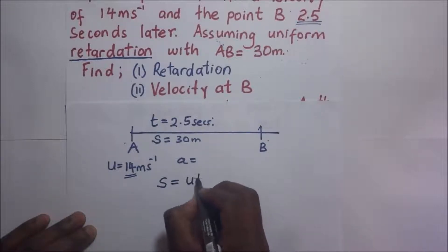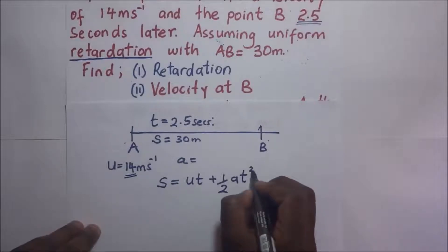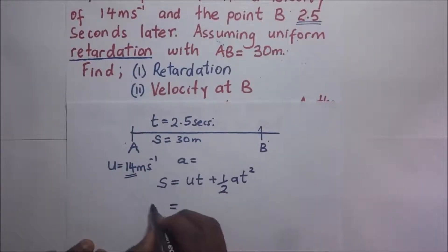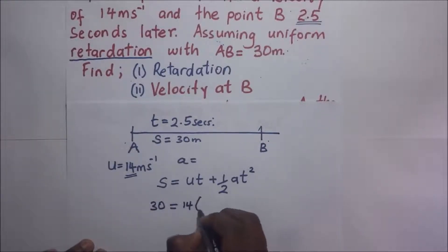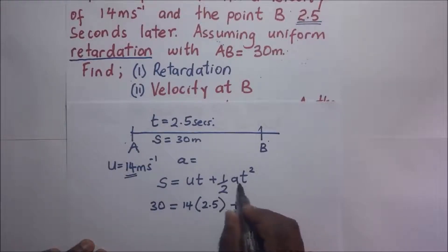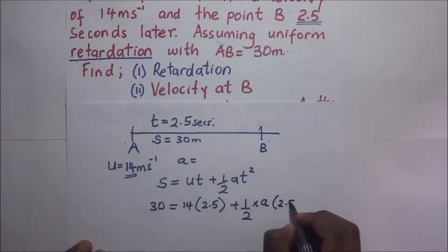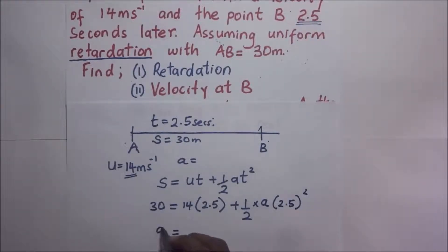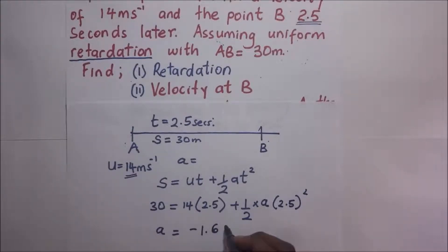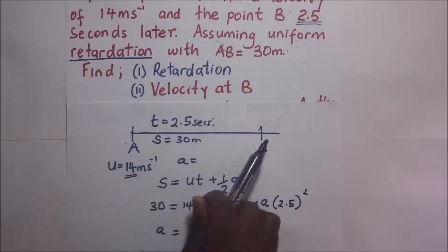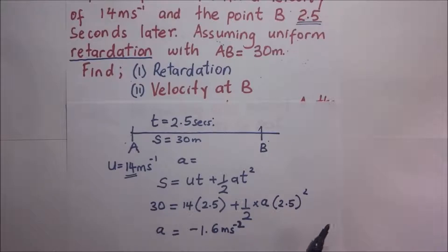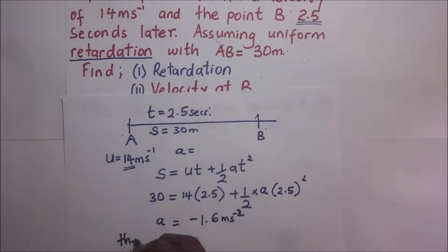s equals ut plus one-half a t squared. We know that s is 30 meters, so: 30 = 14 × 2.5 + ½ × a × (2.5)². When we make a the subject of the formula, we end up with an acceleration of negative 1.6 meters per second squared. This negative value simply signifies that the body is undergoing retardation or deceleration, so we conclude that the body retards at a rate of 1.6 meters per second squared.